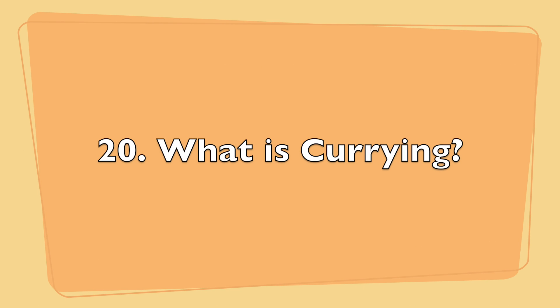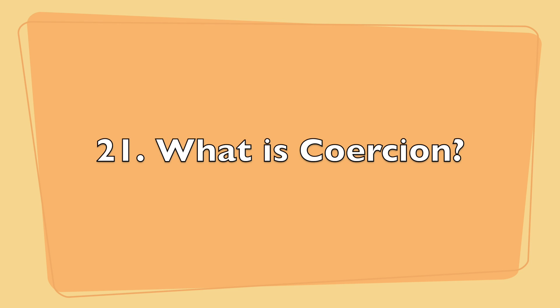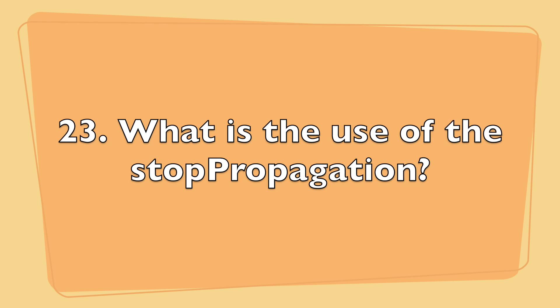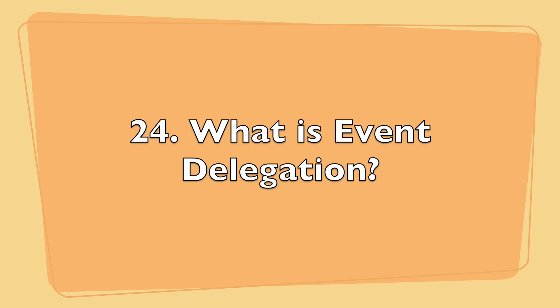The next question is: what is currying? The interviewer might ask you to write an example for currying as well. The next question is: what is type coercion? Then: what is the use of the preventDefault method and what is the use of stopPropagation? And the next important question is: what is event delegation?